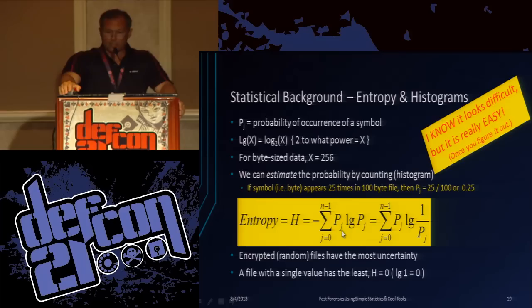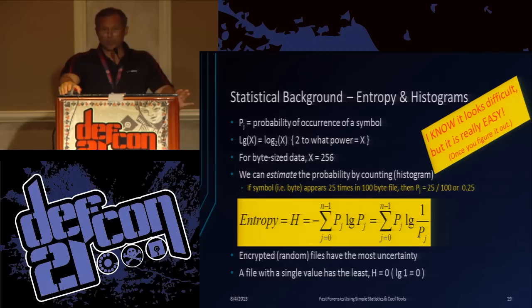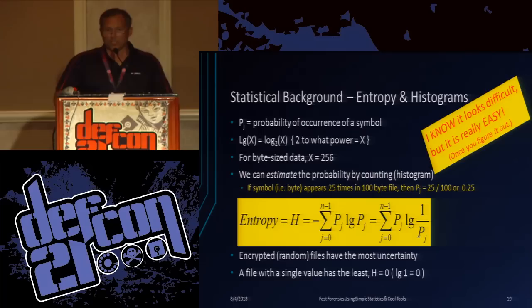We can plug into this formula which looks complicated but it's really just a for loop that's multiplying the probability times the log base 2 of the probability and adding it all up. You'll get a negative number out of that. You add it up and you get an entropy count H. So encrypted files have the greatest entropy. Compressed files are next. Every file type generally has some characteristic range of entropy. Compressed and encrypted files are in a very narrow range. So you can identify a lot just by the entropy.